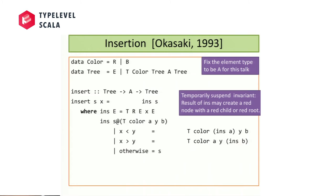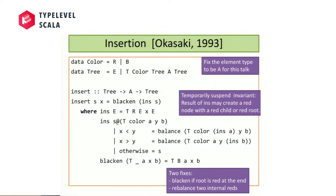The insertion will violate the invariants, but then we recover them. There are two ways we can violate those invariants. First, we may create a tree that's red at the root. A helper function fixes that by forcing the root to be black. Second, since we always make red nodes during insertion, we could end up with two red nodes in a row — and red nodes must have black children. To fix that, we have a balance operation.